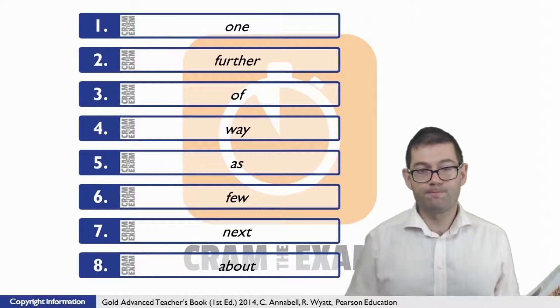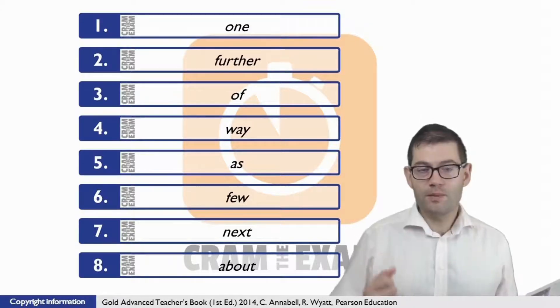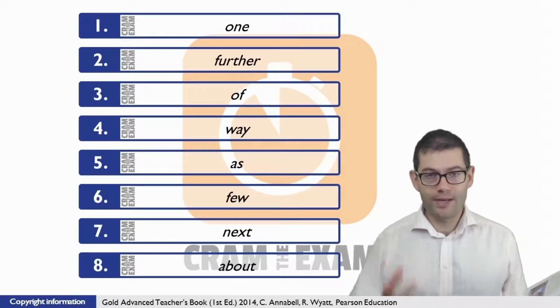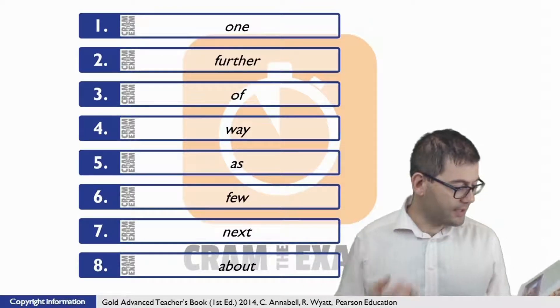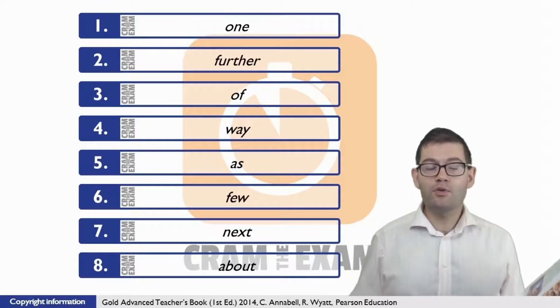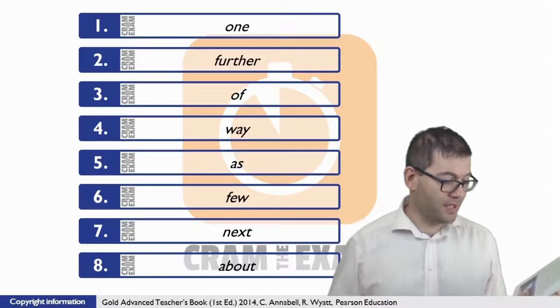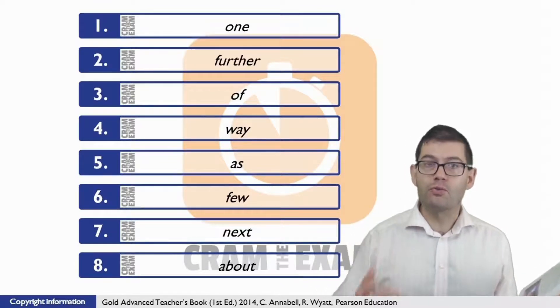Question number six. What we need here is the correct quantifier to quantify other people, given the context. And the context tells us that we're not talking about many other people, but rather a few other people.